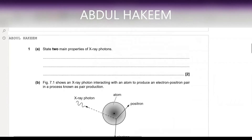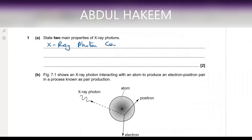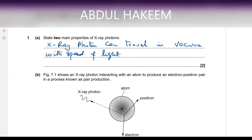Moving to the next question: state two main properties of X-ray photons. Very simple. First, X-ray photons can travel in a vacuum at the speed of light. Second, they have no charge, no mass, but are highly ionizing. These radiations are highly ionizing photons. You have to write any two.